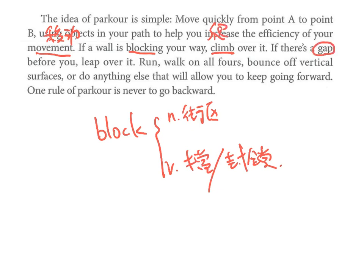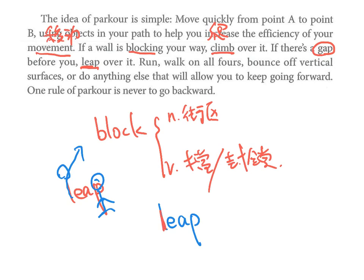如果一道墙挡住了你的路，climb就是爬，你就给它爬过去。如果有一个gap洞在你面前，leap这个字就是跳，你看这个象形文字往上跳然后脚落下来，leap over it就是跳过去。run跑步，walk走路，on all fours是用你的四肢，fours指的是limbs四肢。